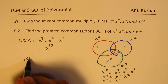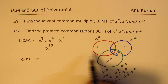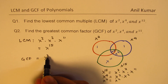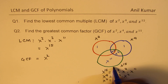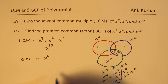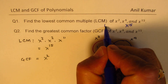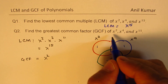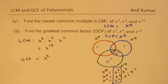Now let's look at the greatest common factor. The greatest common factor is common to all of them, and clearly the greatest factor common to all three is x squared. So the greatest common factor is right there for all three of them. We have x to the power of 15 as the LCM, and the GCF is x squared. That is how we answer this interesting question.